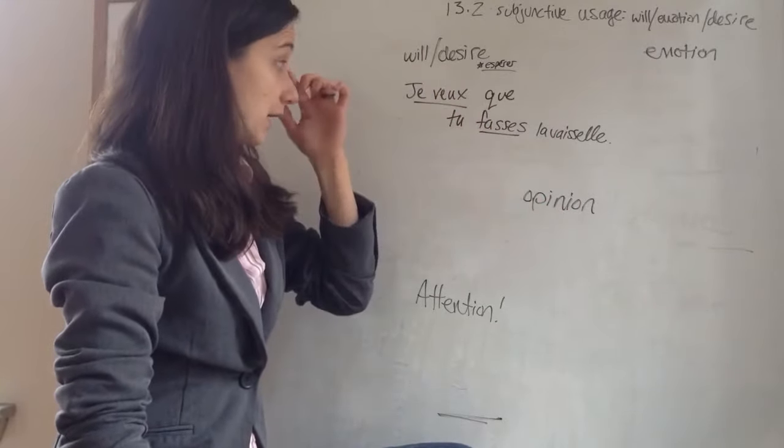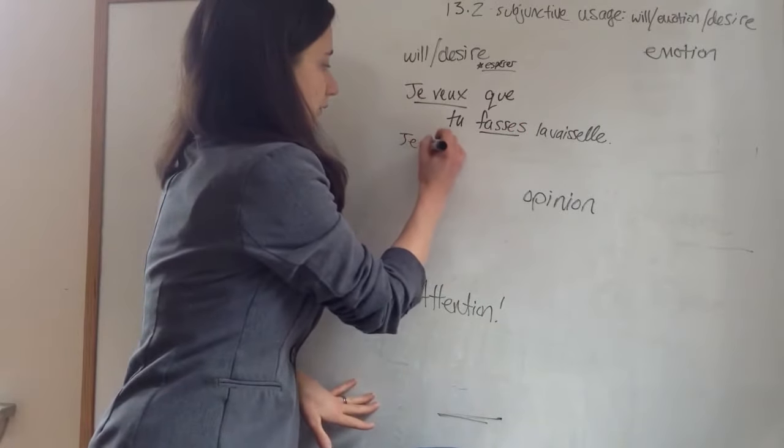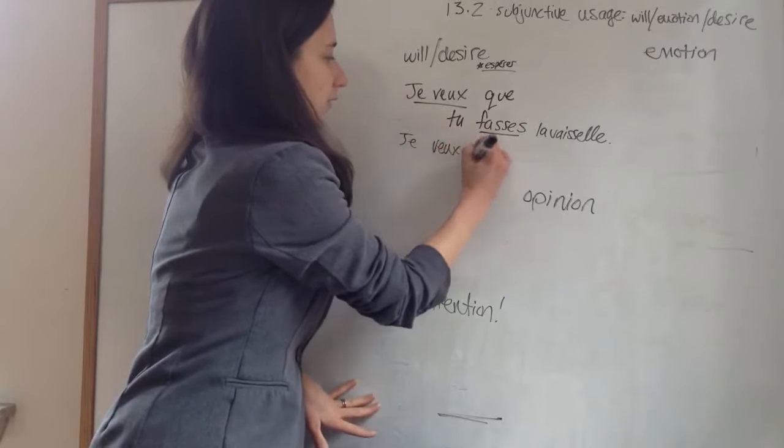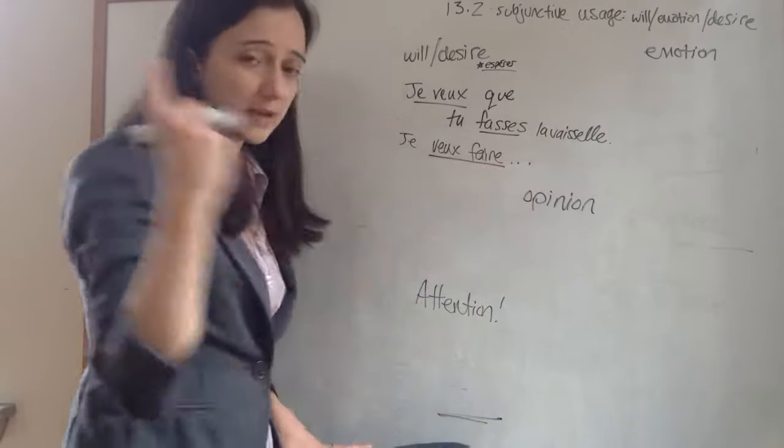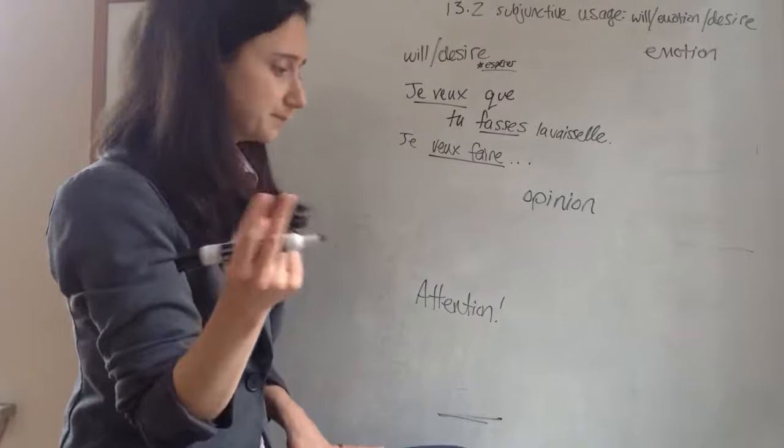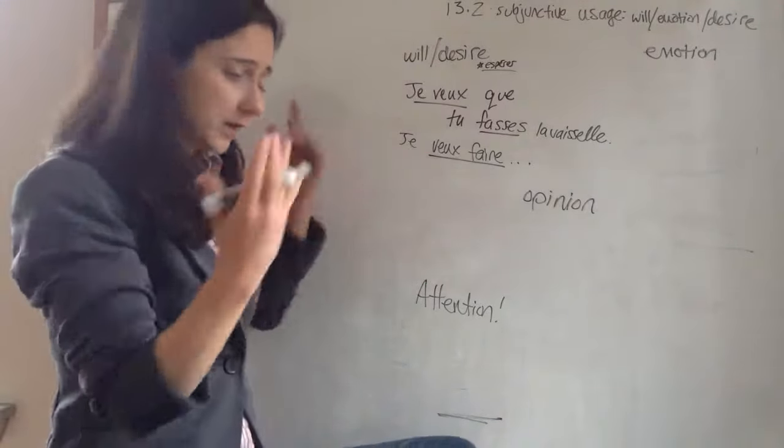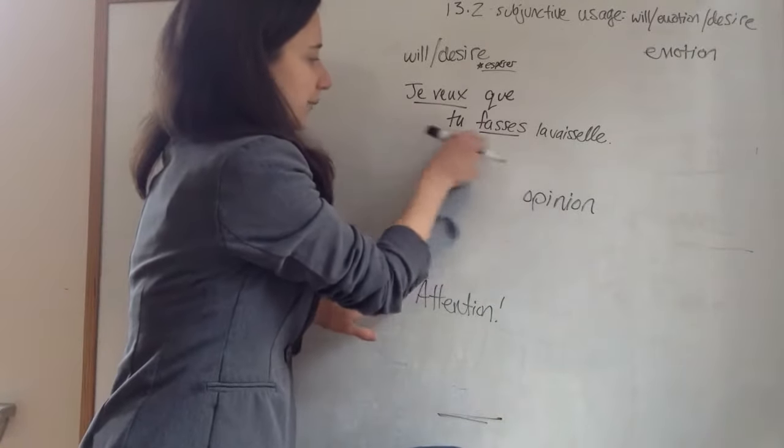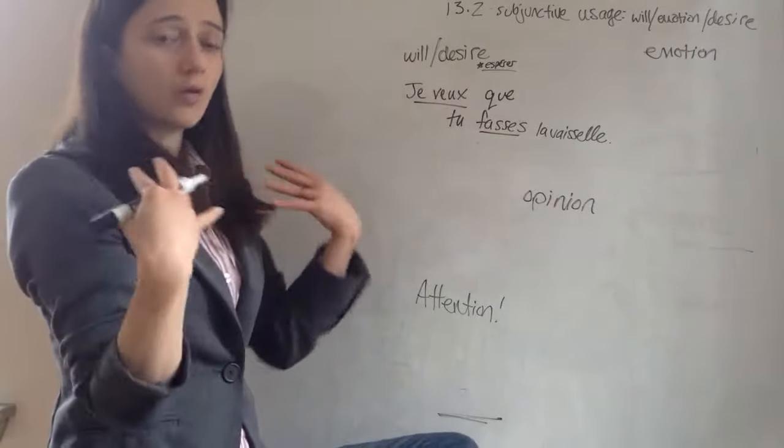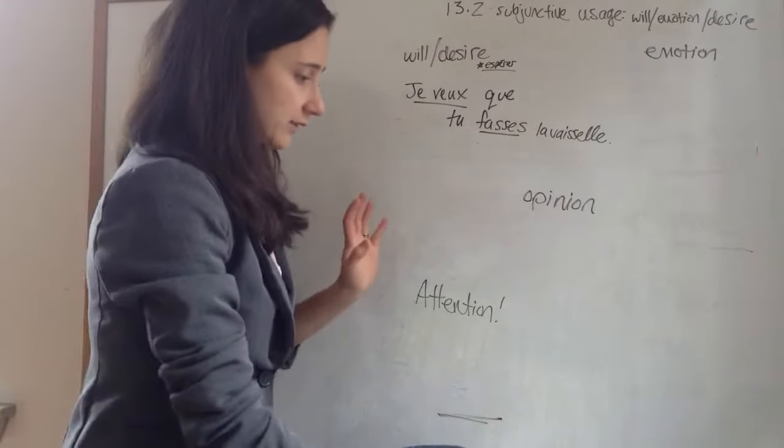So you're not saying I want to do the dishes, in which case, je veux faire. Because we only have one subject, we only have one clause there. So that's what we did in French one. Of course we don't need the subjunctive, but we're saying we're basically saying there's a separate subject that we are pushing our desire onto, and that's when we need the subjunctive there.